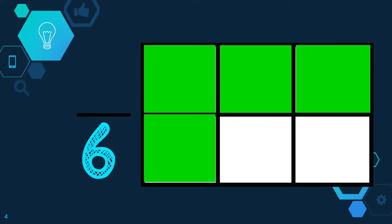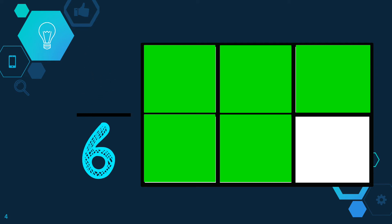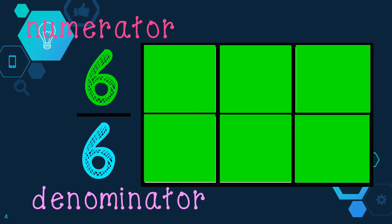If I shade another part of my figure, now I have shaded 4 out of 6 parts, or 4 sixths. If I shade another part of the figure, I have shaded 5 out of 6 parts, or 5 sixths. And let's say I shade the last part of the figure. Now I have shaded 6 out of 6 parts. Again, notice that the numerator and the denominator are the same. Since they are the same, I have shaded 1 whole piece, as you can see by the figure.